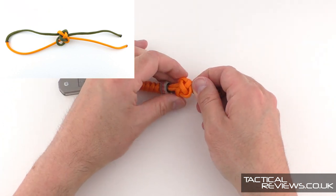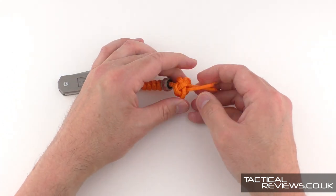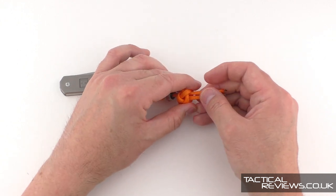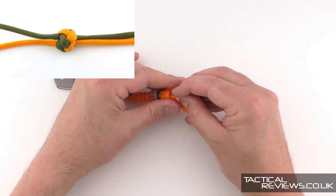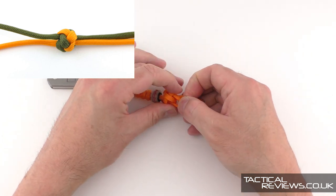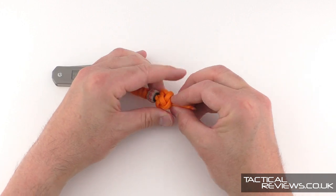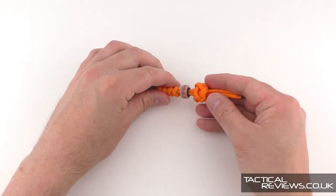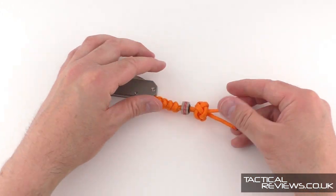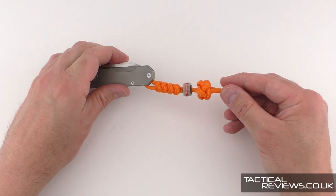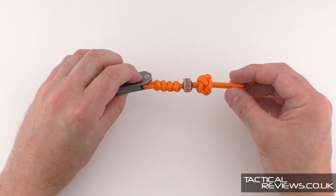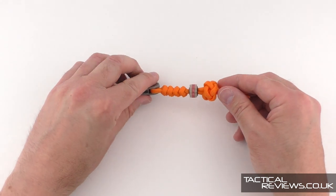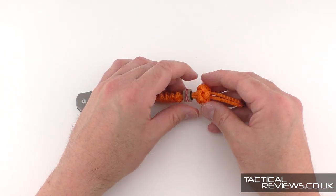Once you've got there the knot itself is tied but it needs working back so what I want to do is have the bead held in position. So just quickly spin the knot so you can see how that lanyard knot is a larger knot than the snake knot.